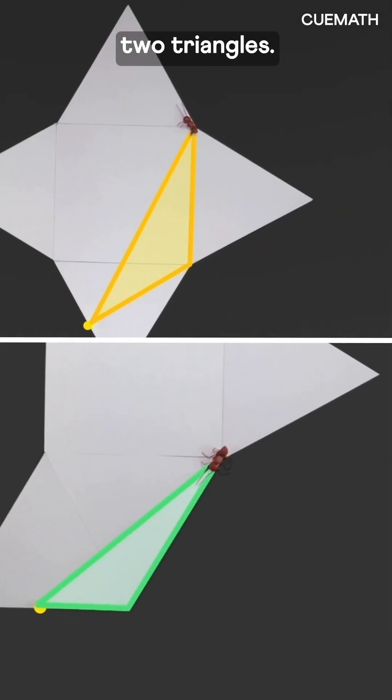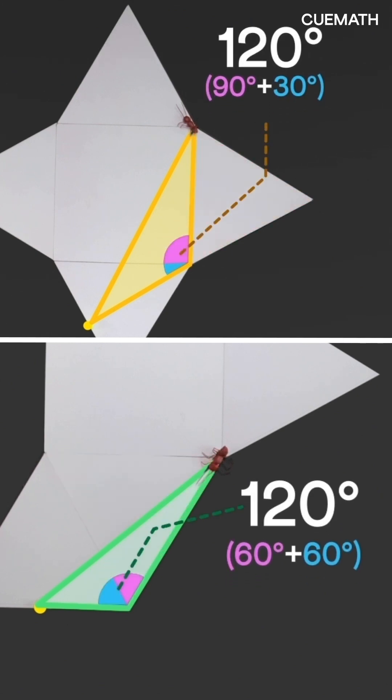Consider these two triangles. These sides are equal as they belong to the same equilateral triangle. These two angles are also equal, 120 degrees each.